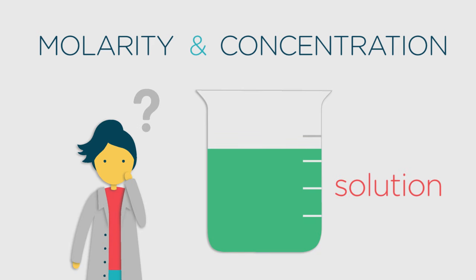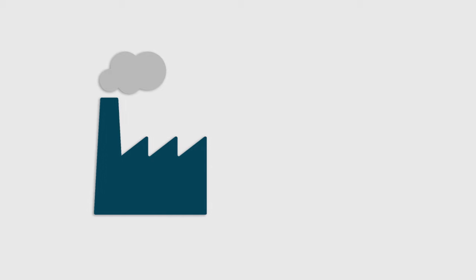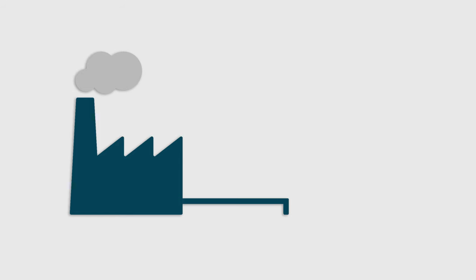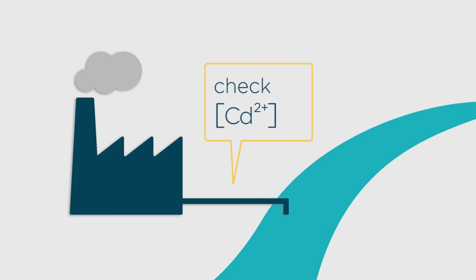In case you're wondering why it's important to know the concentration or molarity of a solution, think about this example. Imagine a chemical factory. It carries out reactions which produce poisonous cadmium metal ions dissolved in water. It pumps the waste from these reactions into a local river and regularly checks the cadmium concentration in its waste pipe.